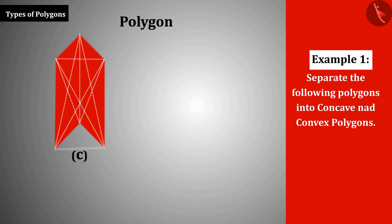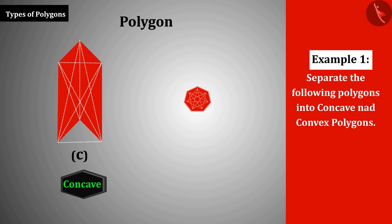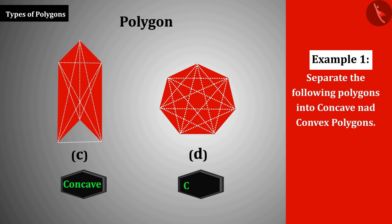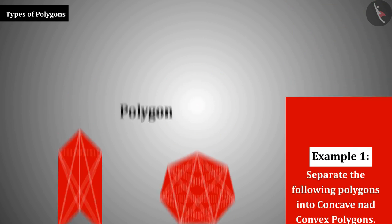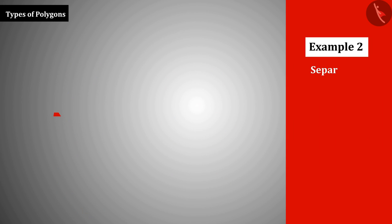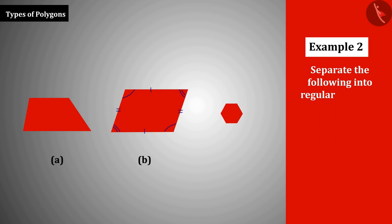Similarly, polygon C is concave and polygon D is convex. Example 2: Separate the following into regular polygons and